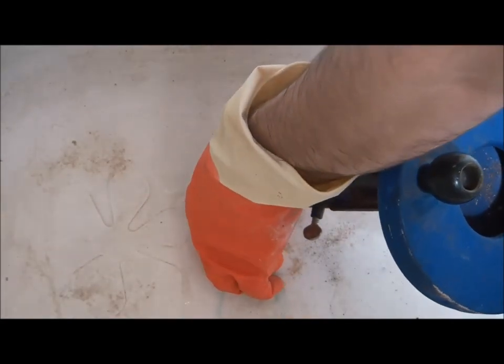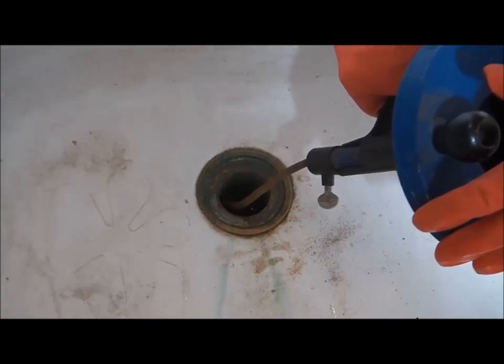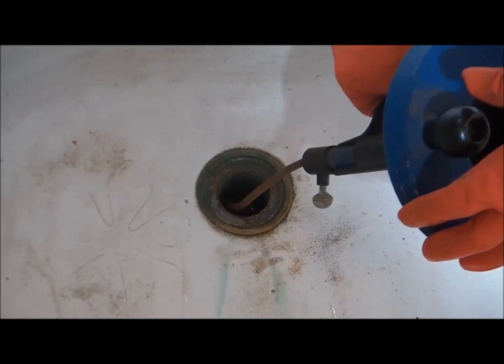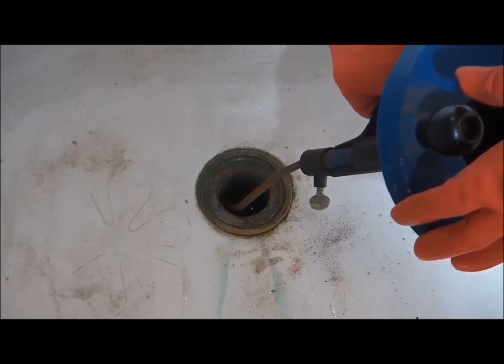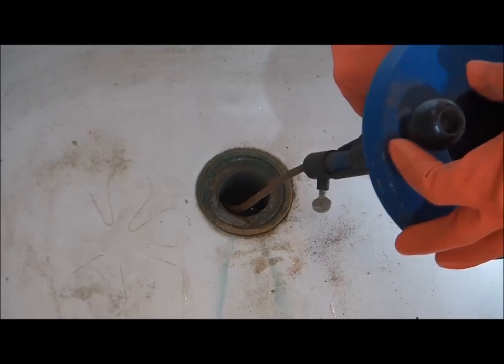Now, release more of the snake, and this is what you have to do. So, as you turn and more of the snake goes into the drain, you loosen the lock, release more of the snake, then tighten the lock, and continue to turn.